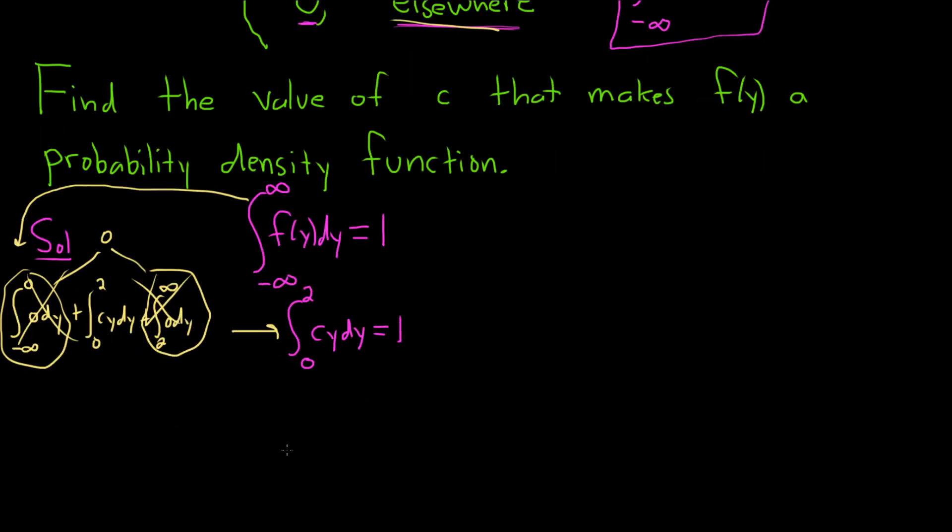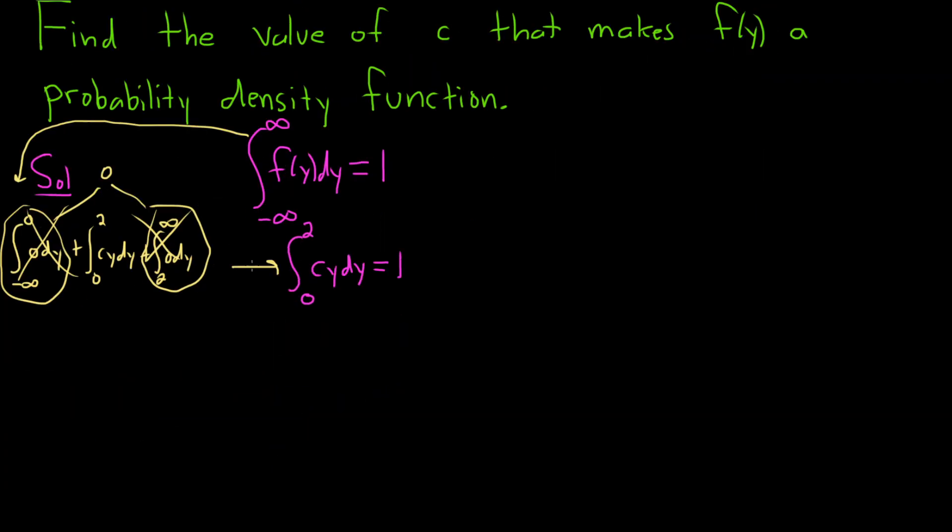Now we just have to integrate this. We'll integrate y using the power rule. Remember c is a constant, so it hangs out. This will be c y squared over two, and this is equal to one, going from zero to two.